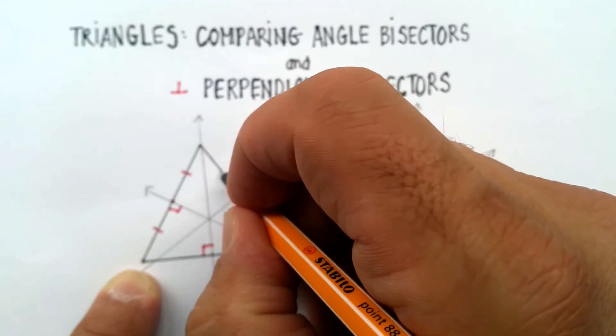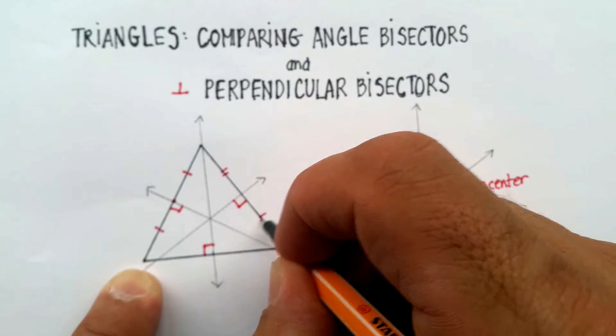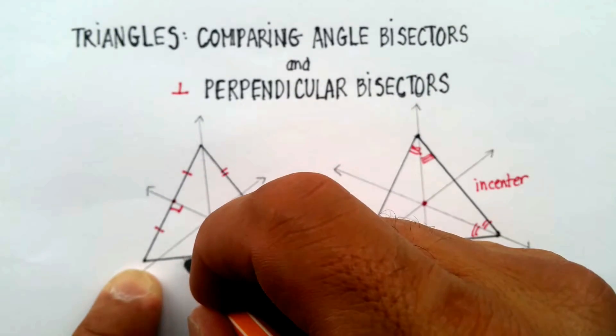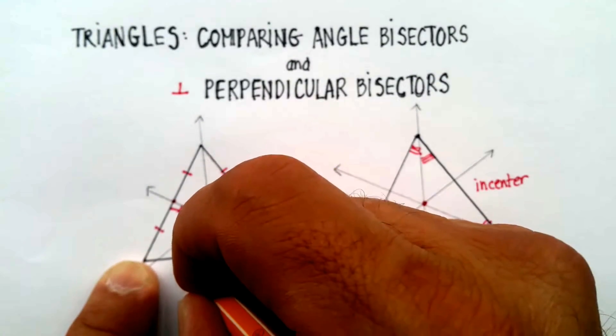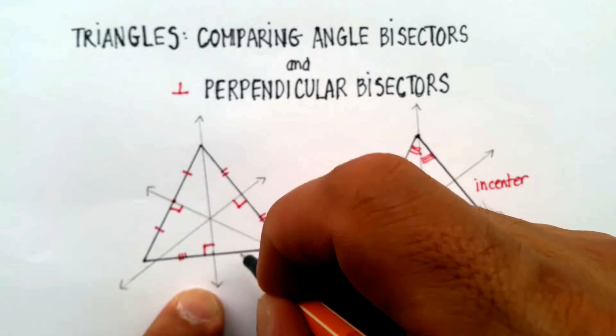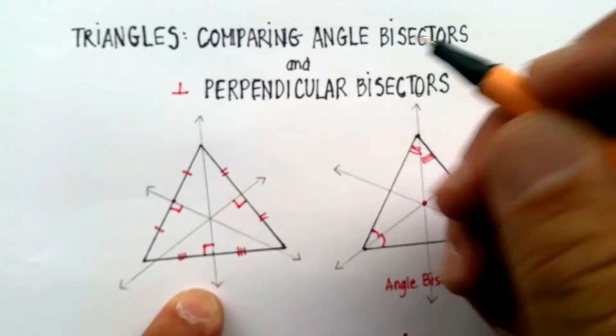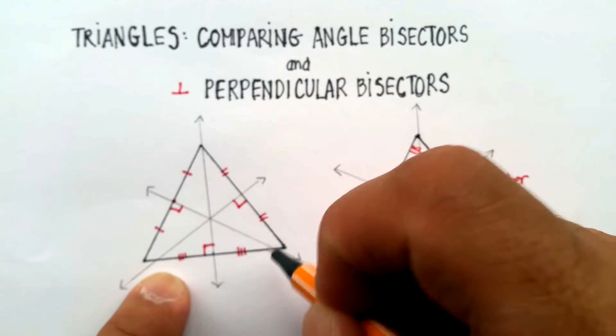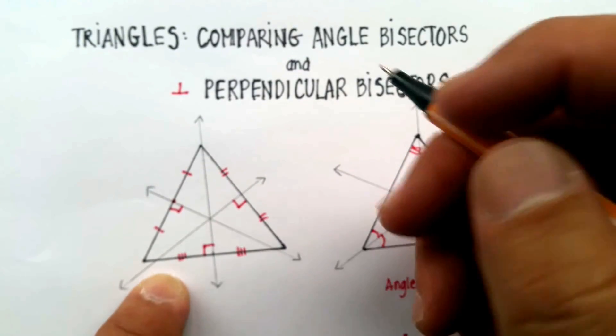This segment would be equal to this segment. This segment here, put three marks, is equal to this segment here. And again, remember, put a number of marks so that you know that it's different from these other sides.